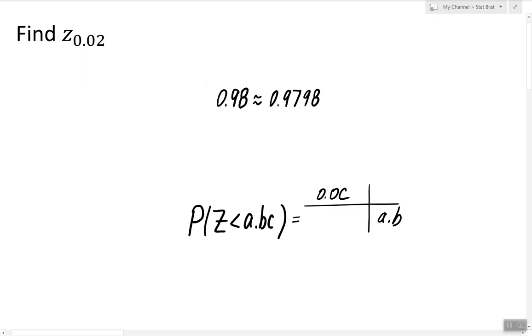And to actually answer the question about Z alpha, I simply have to read the margins of the table. So 2.0 and 0.05, and by adding these two numbers in the margins, I find Z alpha. So Z 0.02 is equal to 2.05.